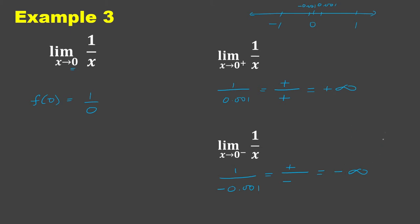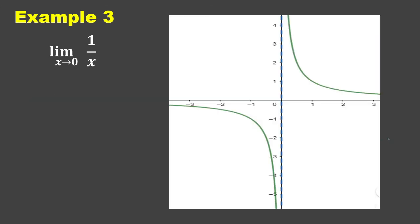Since the left-hand limit is not equal to the right-hand limit, we can say that the limit of 1 over x as x approaches 0 does not exist. Checking its graph, we have a vertical asymptote at x equals 0. As we move closer from the right we have positive infinity, and from the left we have negative infinity. So the answer is does not exist.